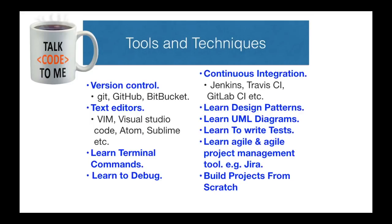The next suggestion is to learn any continuous integration software. CI software helps you to test, compile, and deploy your code — handling all the important steps in your software lifecycle. There are many CI tools available. The most popular one I use personally is Jenkins, but there are modern CI tools like Travis CI or GitLab CI which you can also use.